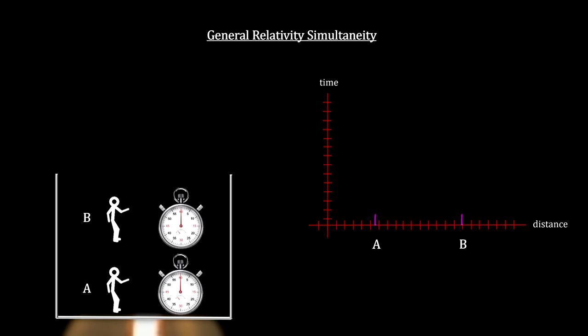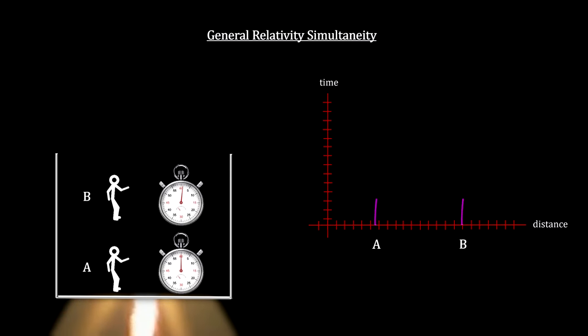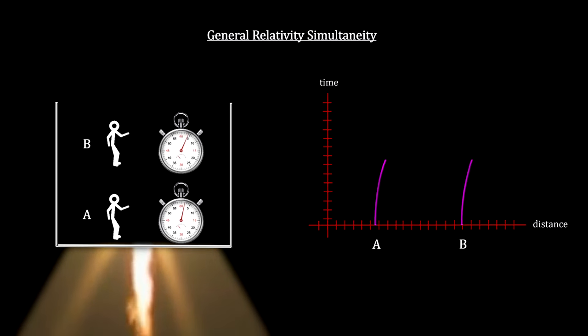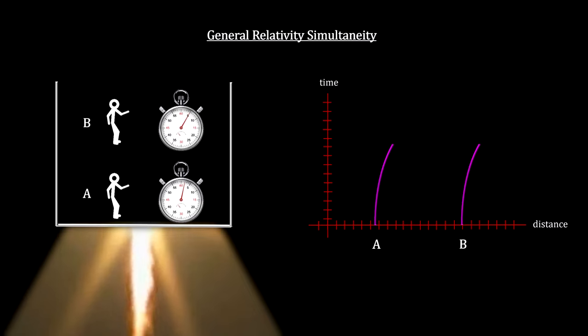As the elevator accelerates, the world lines on the space-time graph are not straight lines. They curve outwards, because their velocity increases with every second.